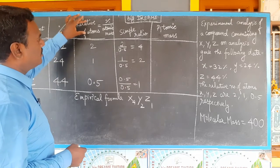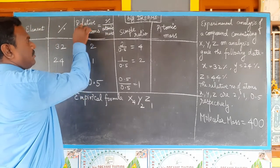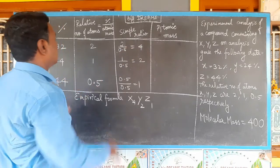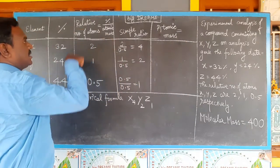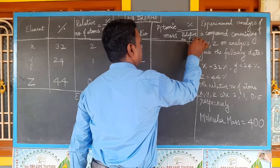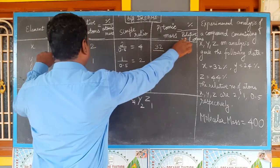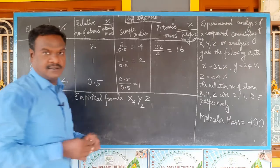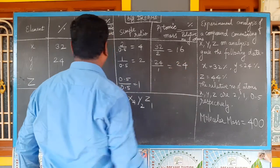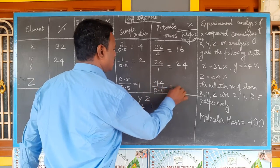The relative number of atoms is the relative number of moles, which equals percentage divided by atomic mass. Therefore, atomic mass equals percentage divided by relative number of atoms. So atomic mass of X = 32 / 2 = 16, atomic mass of Y = 24 / 1 = 24.